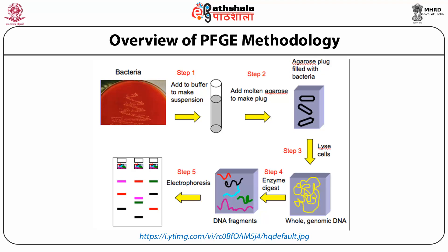It is very important in this methodology that agarose plugs are made with enough cells and are handled properly so that the DNA is not sheared. This protects bacterial DNA from external DNA smearing or damage. The bacterial DNA remains embedded in the agarose while the outer cell wall and inner membrane are dissolved using proteinase K and various detergents. After that, the plugs are placed into the PFGE gel and, using a specific pulse time depending upon the size and resolution required, the DNA is resolved into bands. This entire process takes 16 to 24 hours.